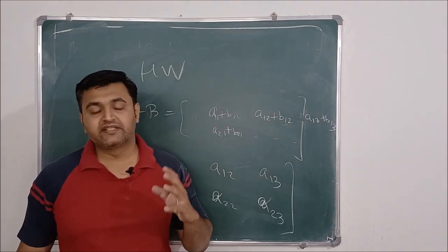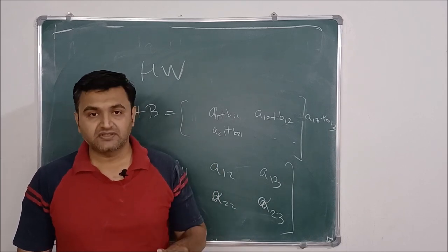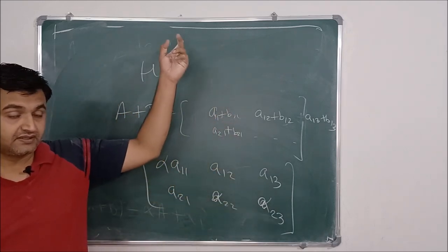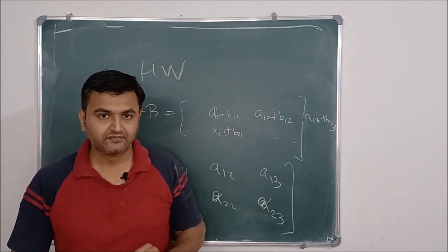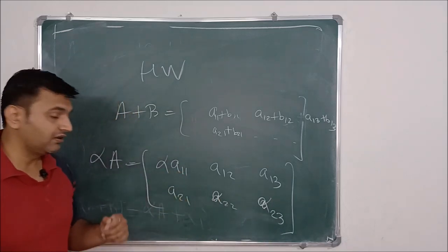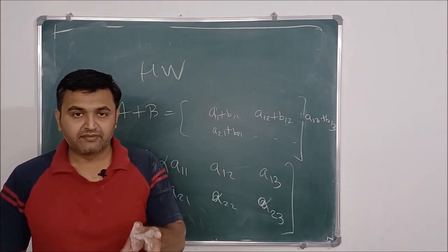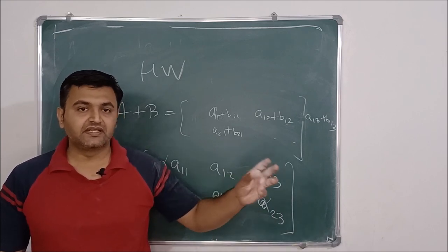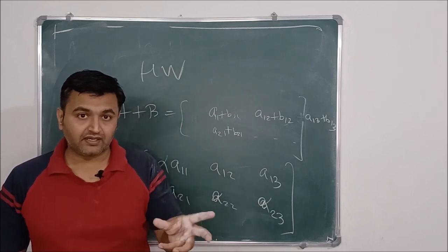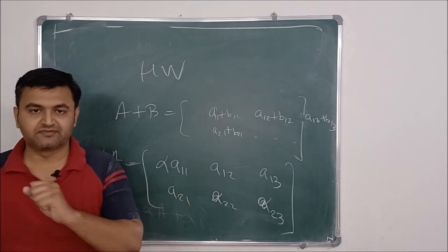Whatever we proved for 2×3 matrices can be done in general for any 2×2, 5×2, 10×10 — in general for M×N matrices. So M_{M×N} forms a vector space over the real numbers under the standard addition and scalar multiplication operations. However, it does not form a vector space over complex numbers because if α is complex, then α·A would have entries containing complex numbers, whereas our set M_{M×N}(R) requires all entries to be real.